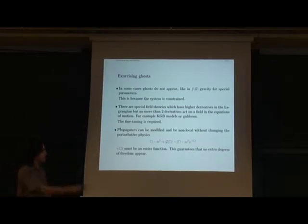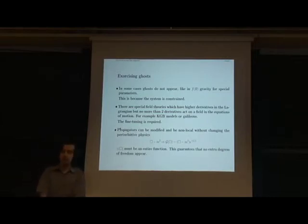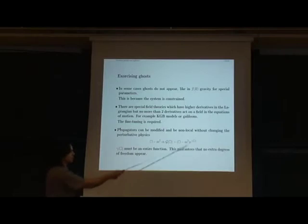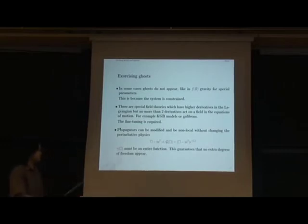There are other constructions like KGB models, Galileons and stuff like this. There are high derivatives. There are no ghosts. Again, because there are special relations between structures in the Lagrangian. And one thing which was really admitted for a while is the possibility to construct non-local stuff. Meaning that it replaces your canonical very natural local propagator, local kinetic term with something new.